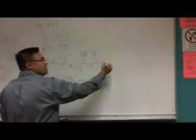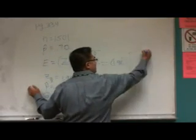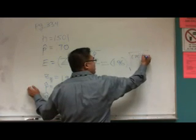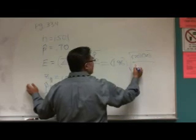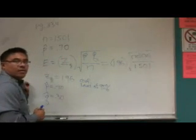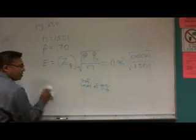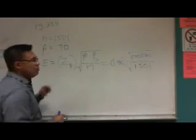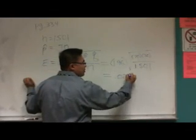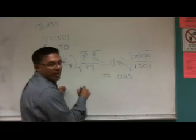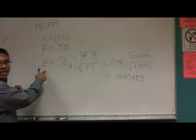So Z, we said, is 1.96 times the square root of P hat times Q hat over N. So this is 0.70 times 0.30 divided by N, which is our sample size of 1501. Okay, so let's go ahead and do some math. Plug those numbers into your calculator, and you should have this as being equal to 0.023183. So that's our margin of error. That's our E, right?